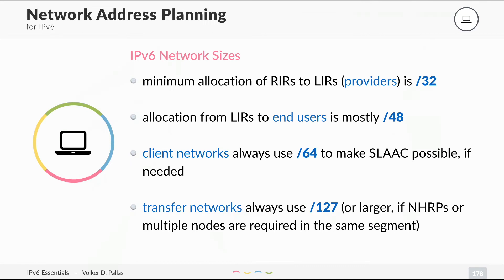For transfer networks between two routing devices or a switch and a router, always use a slash 127. Remember, IPv6 is 128 bits, so a slash 127 has exactly two addresses. You can also use a slash 126 if you need next hop redundancy protocols or multiple nodes on the same segment. But don't use a slash 64 on transfer networks — slash 64 is for clients, slash 127 or 126 is for transfer.